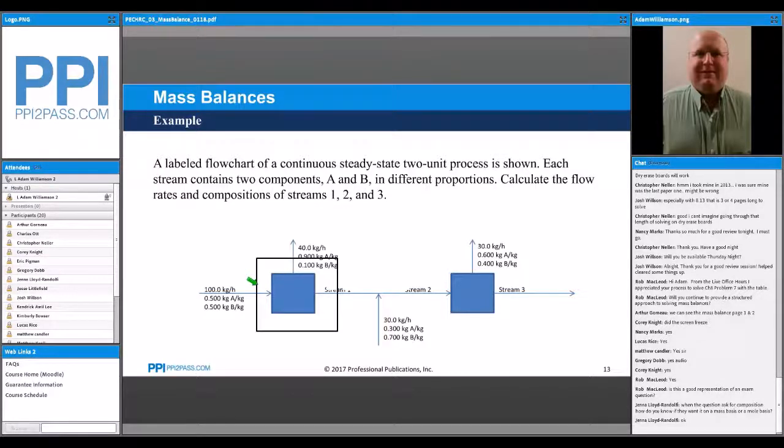Does everyone catch how I quickly looked at that balance to see where to start? That's what's known as a degree of freedom analysis. It's not really covered in the NCES handbook, but it's a quick check to see where to start. If there was a reaction or some sort of physical relationship given for any of these unit ops, that would increase the number of equations available.